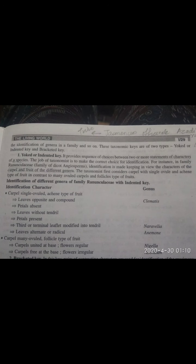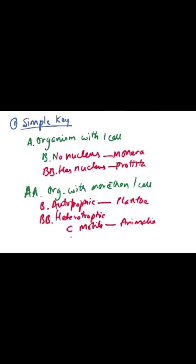Like this, there are taxonomic keys for every organism, written by scientists. For example, for kingdom Monera, the key character is that there should be no nucleus.